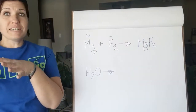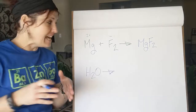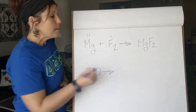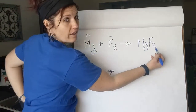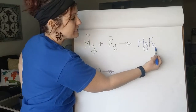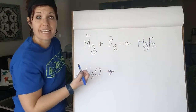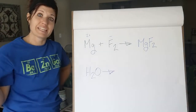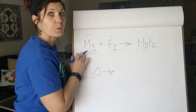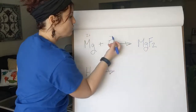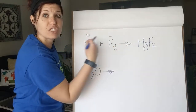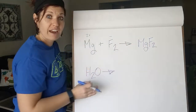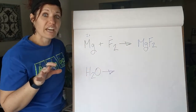Sometimes a mistake students make is they just carry over the subscripts, but that is not why this two is here. This two is not here because fluorine is diatomic. The only time it matters if an element is diatomic is if it is alone. Once it's in a compound, you have to compare the charges and pick the subscript from there. Be really careful with that.